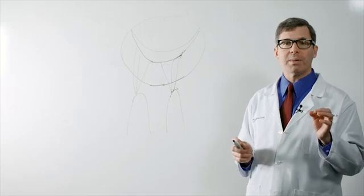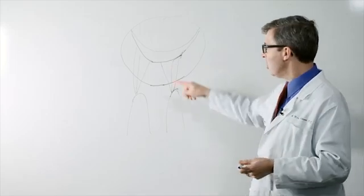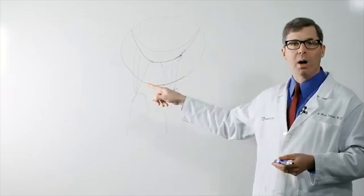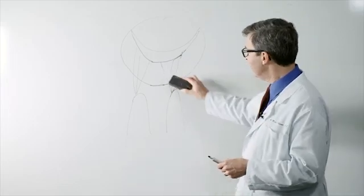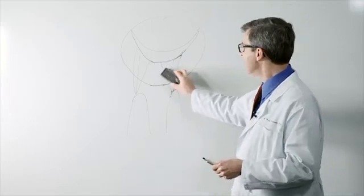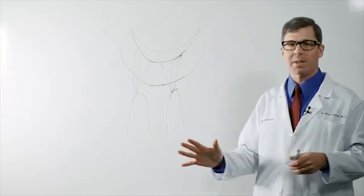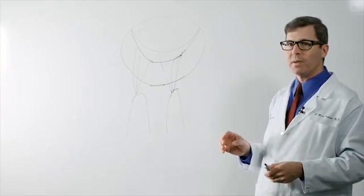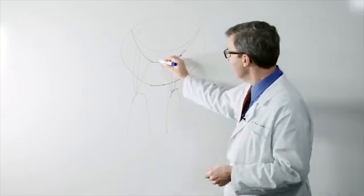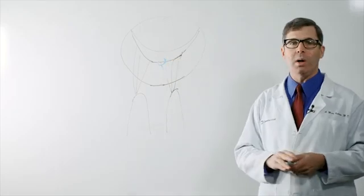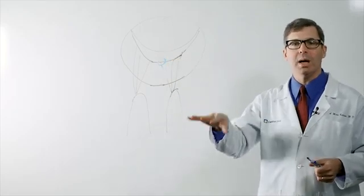Mitral valve prolapse occurs because one of these cords becomes too long or breaks. So imagine this. This cord right here snaps. Just suddenly snaps. That means that a portion of the valve right in here is no longer held down. It becomes too floppy.